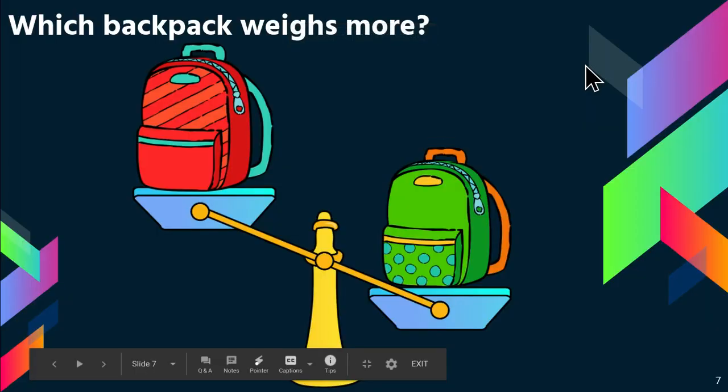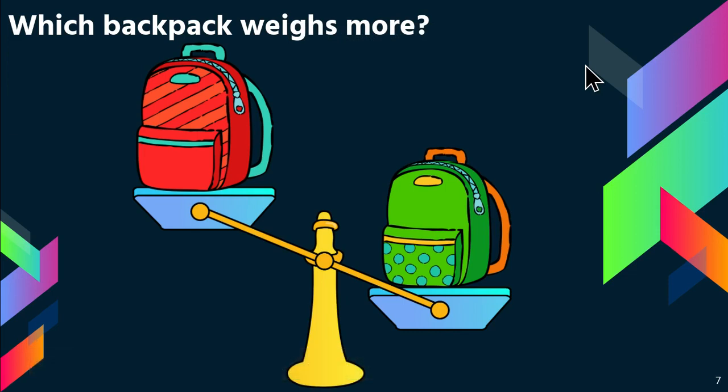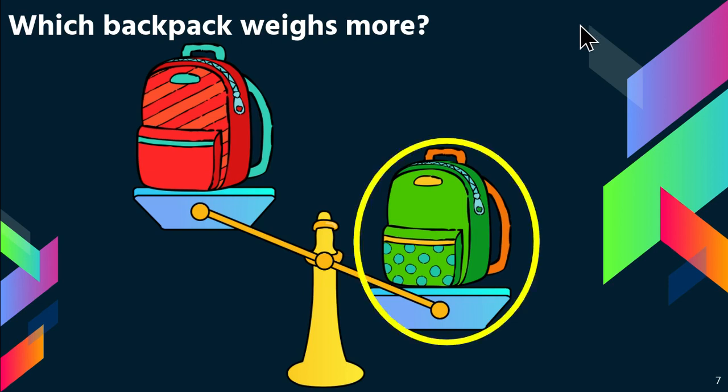When we look at these two backpacks, which backpack weighs more — the red or the green? Remember, this is a pan balance, so it only tells us which one weighs more. According to this, the green backpack weighs more because the pan balance is down on the green side, which means it is heavier.